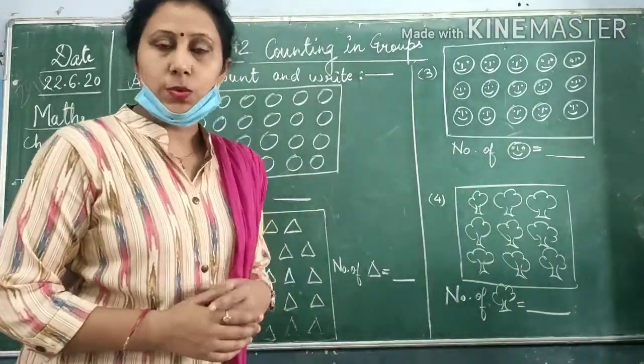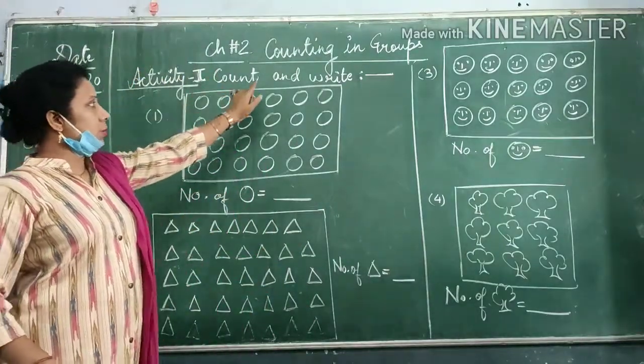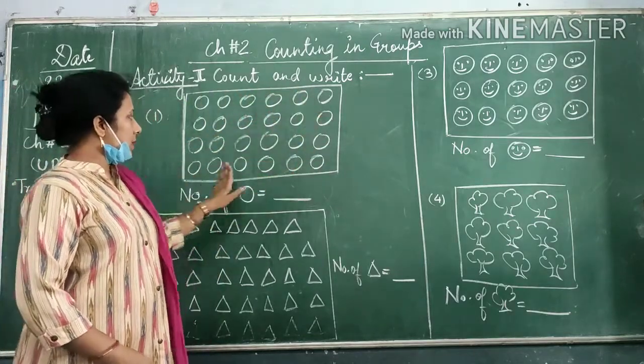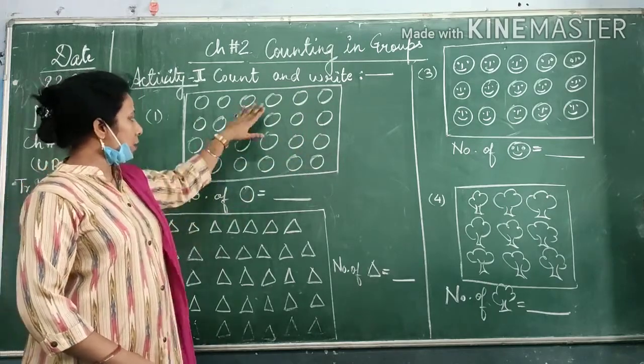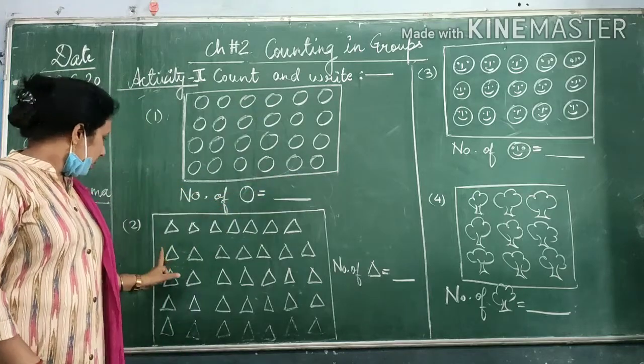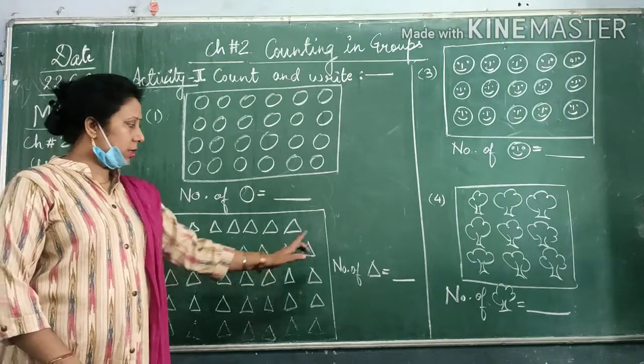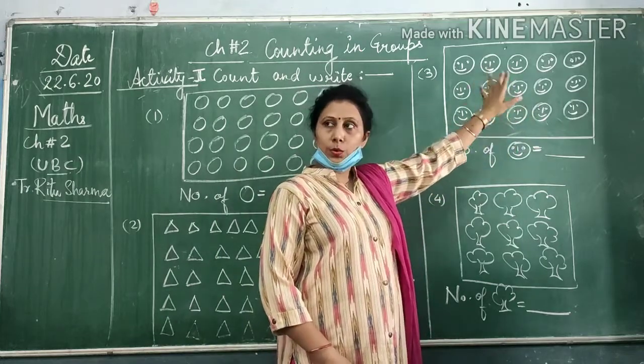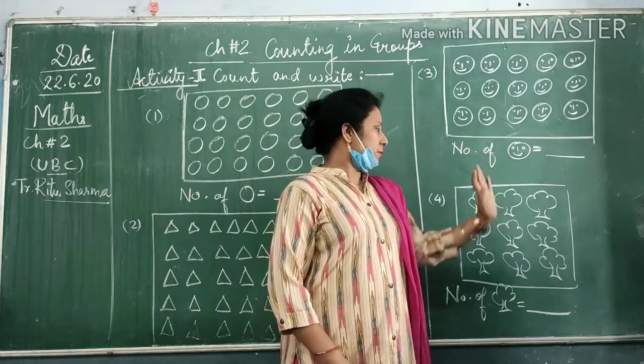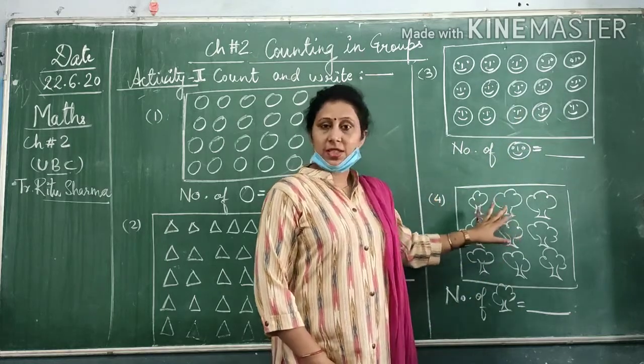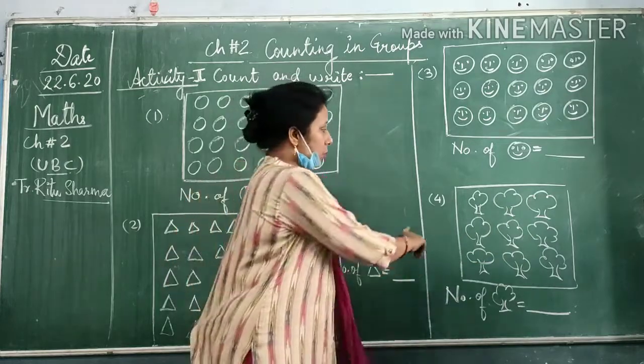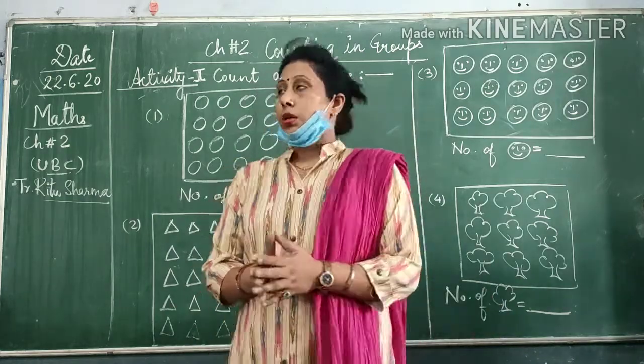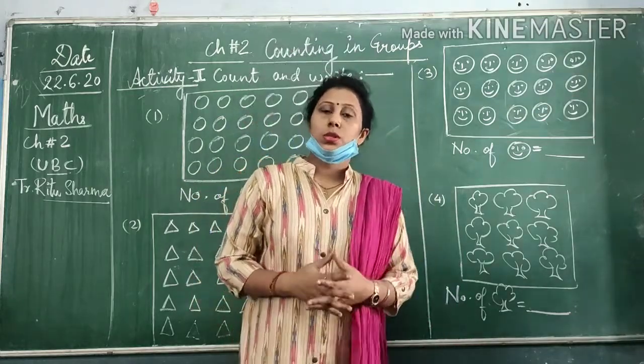Now this is our first exercise. What you have to do here is you have to just count and write. You draw them and count how many circles are there. Likewise here, you will draw all the smileys, count them, and then write number of smileys. In the fourth activity, you will draw all the trees and write how many trees are there. You just write down and do this in your notebook first.